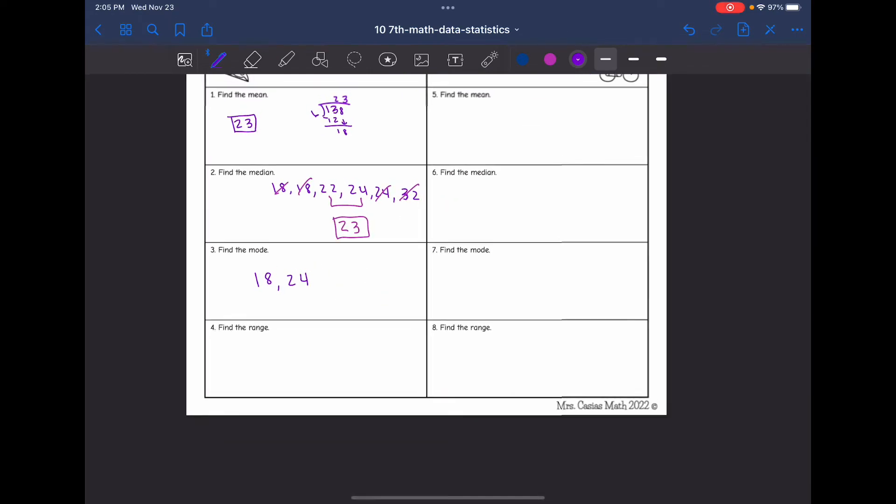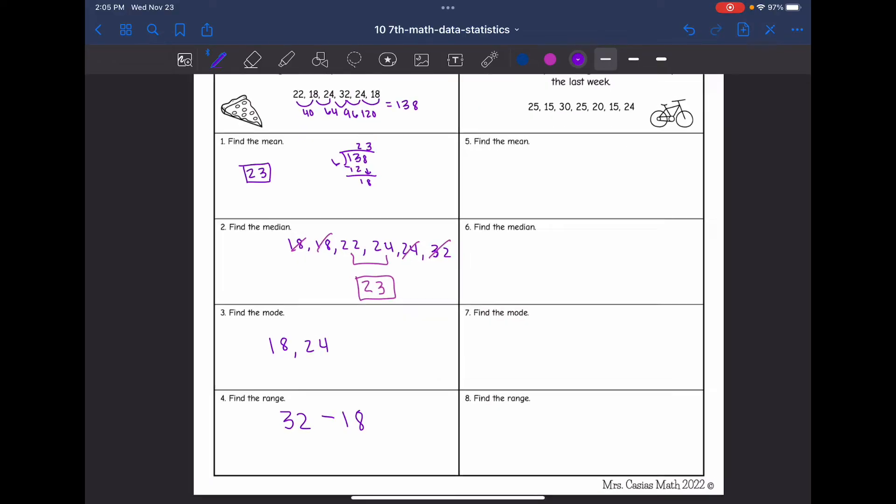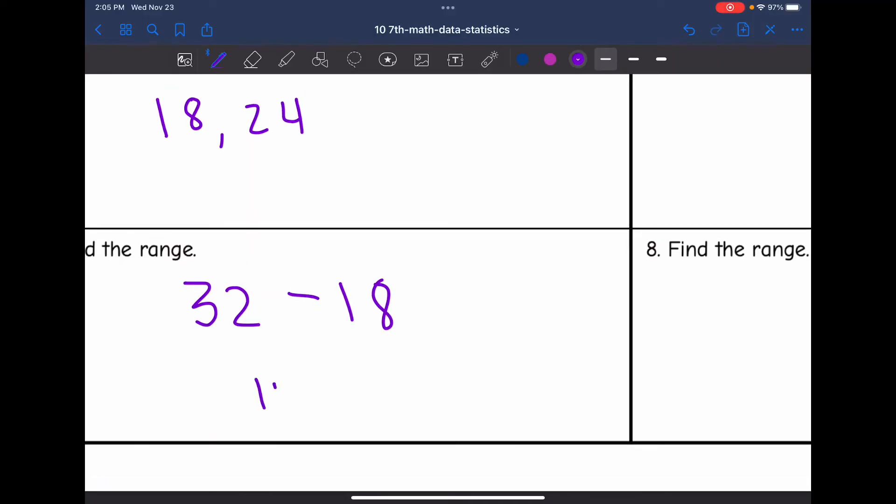And then to find the range, I take the largest number, which is 32, and subtract the smallest number, which is 18, from it. And 32 minus 18 is 14.